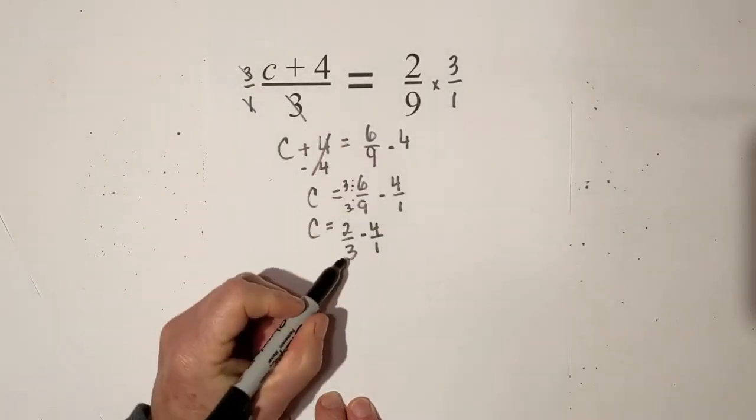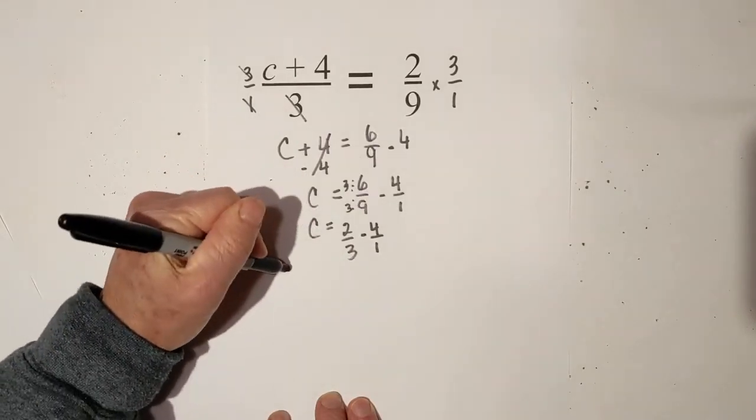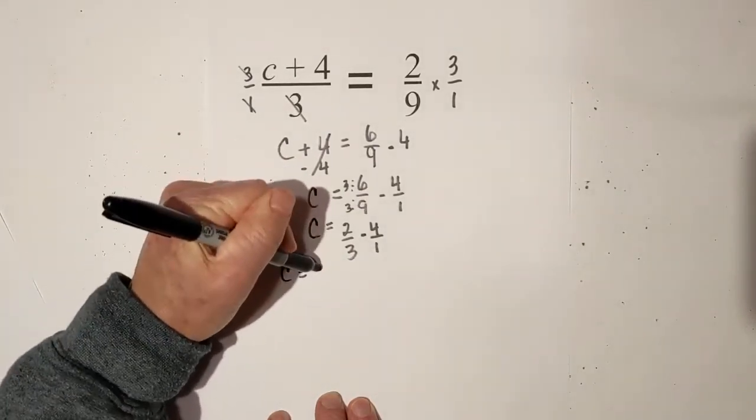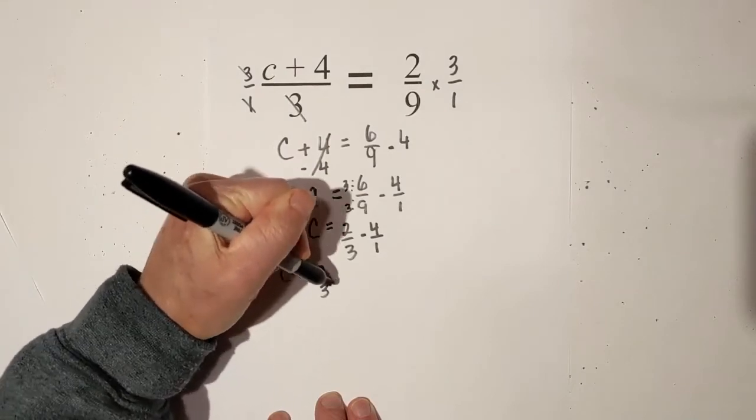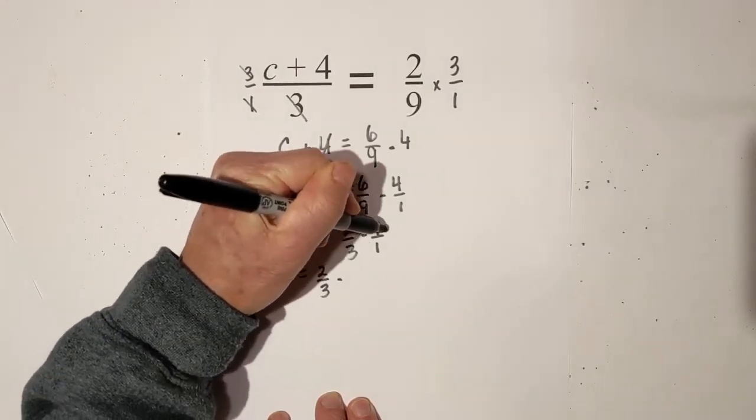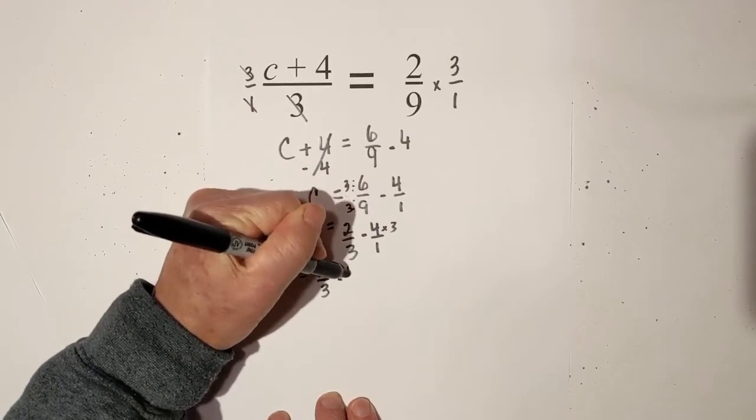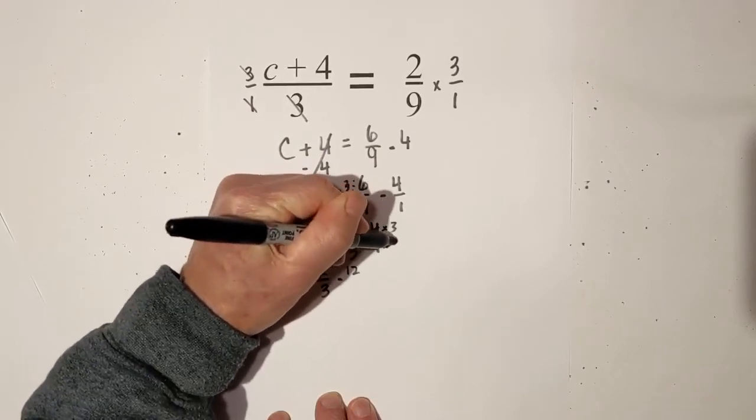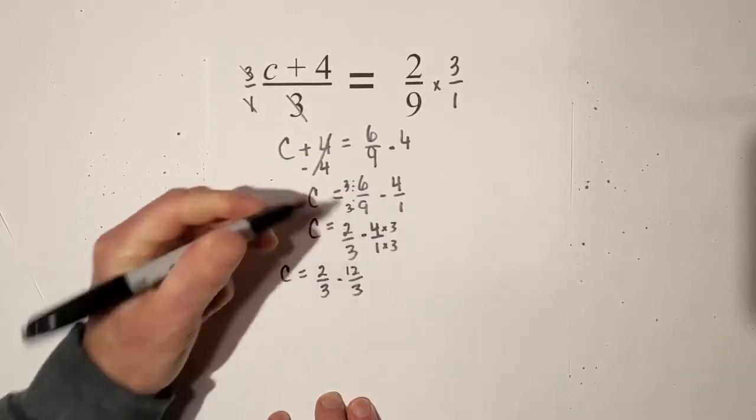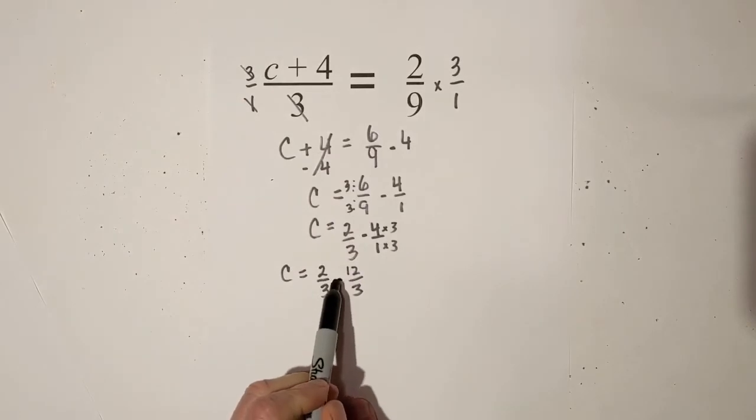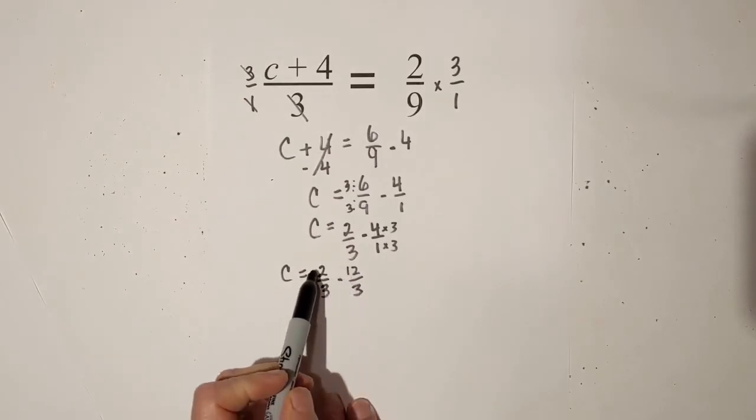So now I have negative ten-thirds and a positive two-thirds, and so that is going to become - twelve-thirds minus two-thirds is equal to negative ten over three.